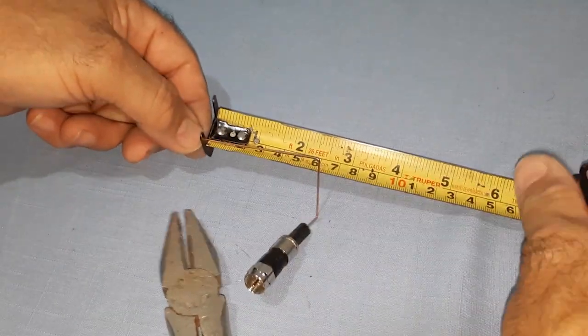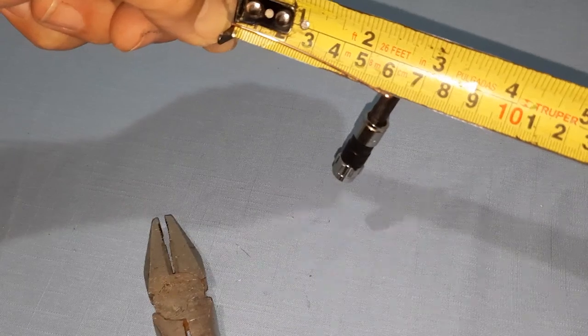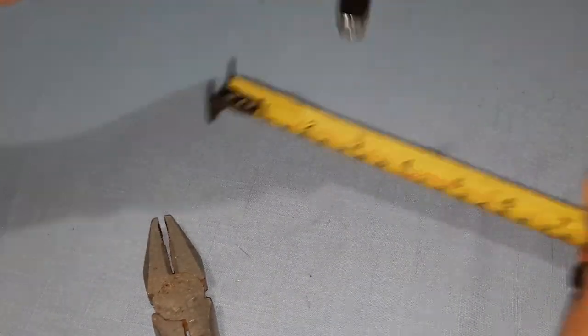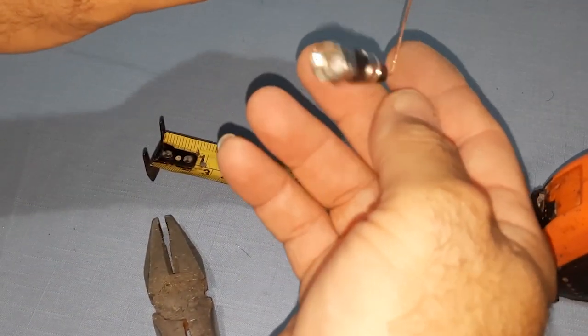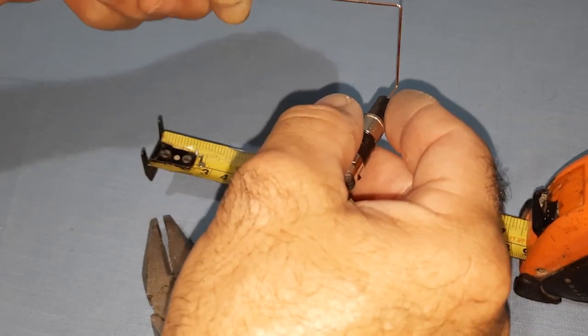Mark and bend at 6 cm reverse bend. Now measure 6 cm from the last bend and mark. Bend the conductor in the opposite direction of the first bend, forming a reverse bend pattern.